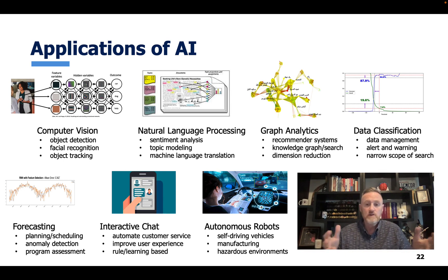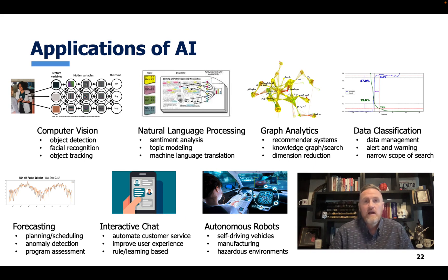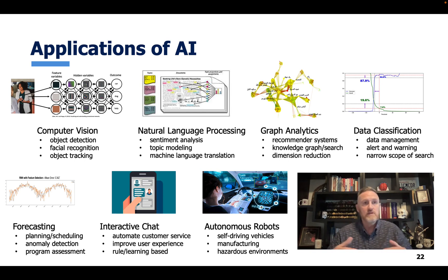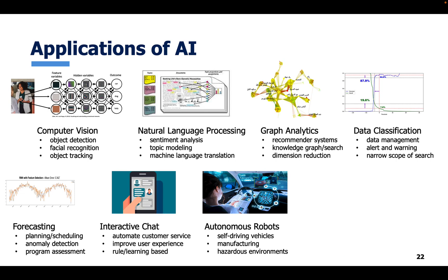Autonomous robots — I'm sure we've seen autonomous cars; people have heard of Tesla and many other vehicles. Companies are doing the same thing. There are also manufacturing applications for autonomous robots, operating in hazardous environments. In Iraq, we used robots to go and disarm improvised explosive devices so we didn't have to put a human in harm's way. There are a lot of applications for autonomous robots.